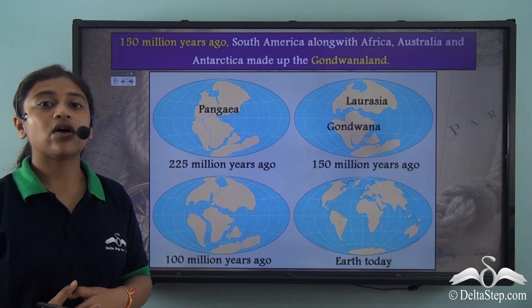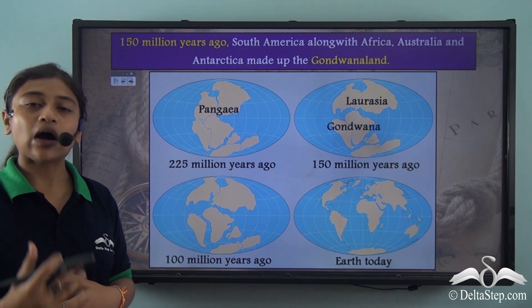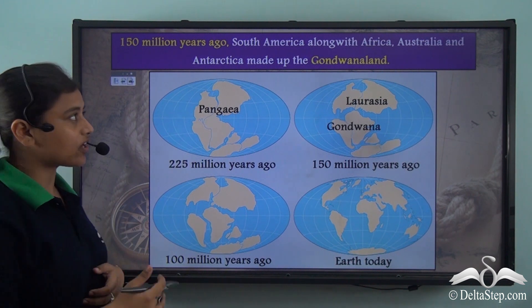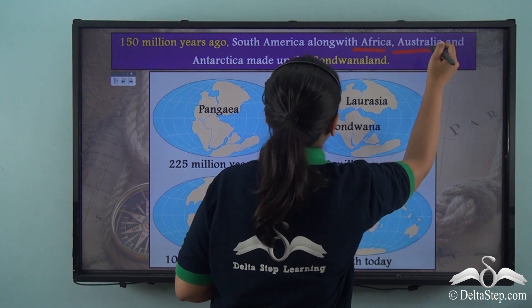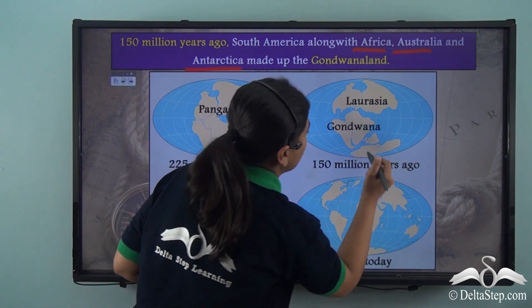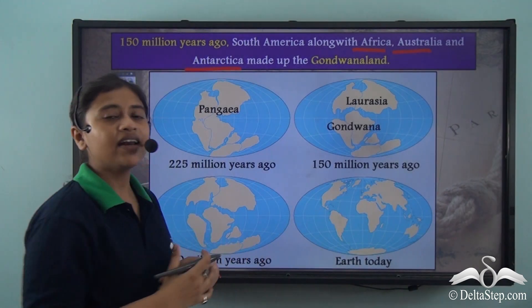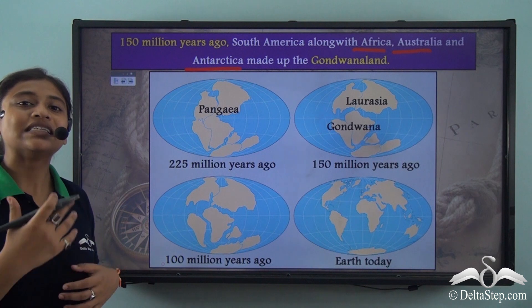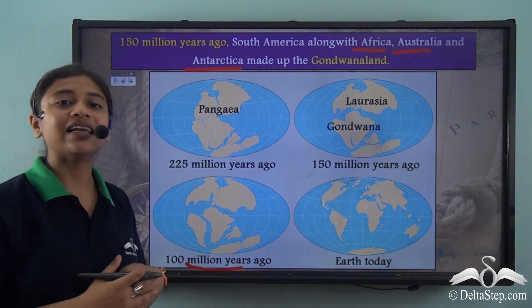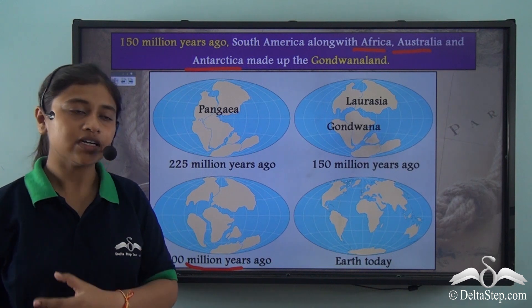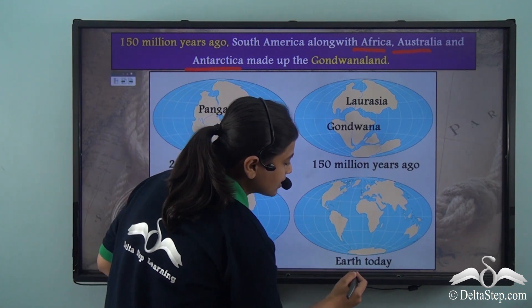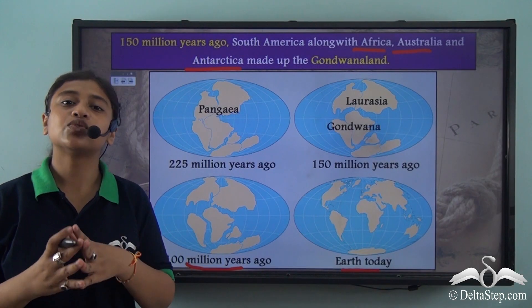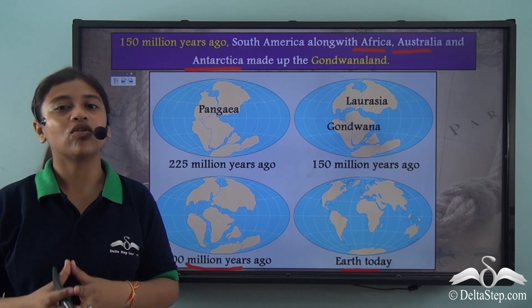Around 150 million years ago, South America was a part of Gondwana land along with Africa, Australia, and Antarctica. Then around 100 million years ago, the continent of South America got separated from Gondwana land, and finally after many years, this is how the continent looks today. So now there are seven continents on our planet, and South America is one of them.